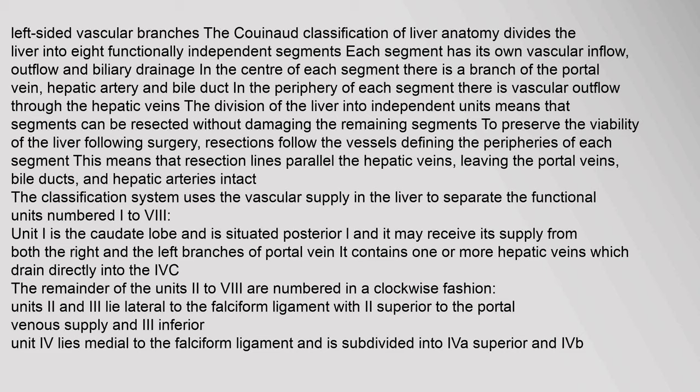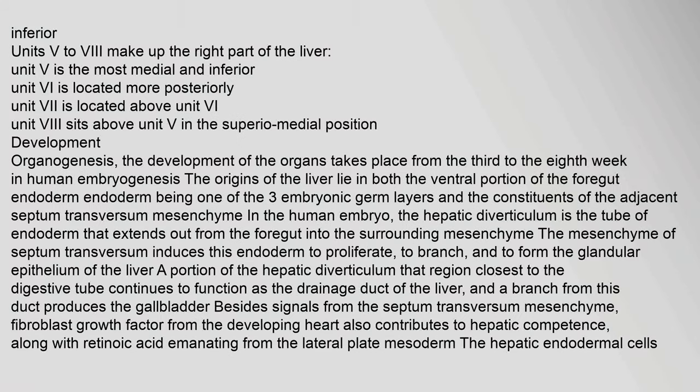Unit I contains one or more hepatic veins which drain directly into the IVC. Units II and III lie lateral to the falciform ligament, with II superior and III inferior to the portal venous supply. Unit IV lies medial to the falciform ligament and is subdivided into IVa (superior) and IVb (inferior). Units V to VIII make up the right part of the liver, with unit V being the most medial and inferior.